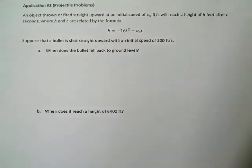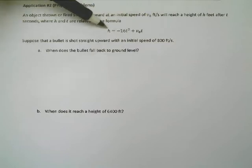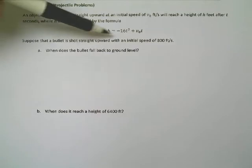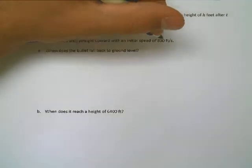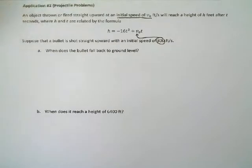So let's say we have an object that's thrown or fired straight upwards, like a bullet that's shot straight up or a ball that's thrown straight up, with an initial speed of v sub zero, that just means zero meaning time zero, or original, the initial velocity. It's going to reach a height of h feet after t seconds, where h and t are related by this formula. So suppose a bullet is shot straight upward with an initial speed of 800 feet per second. Notice that it says an initial speed of v naught. That means we can take this and put it in for that v naught, that v sub zero. So that means our formula is h equals negative 16t squared plus 800t.